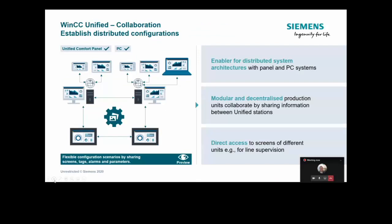Another option mentioned is the concept of collaboration — this is unique to WinCC Unified. This allows multiple different WinCC Unified systems to collaborate with each other. For example, we might have four different WinCC Unified systems: two PC-based with their own individual clients, and two panel-based Unified Comfort systems. The collaboration option — a licensed option on each station — allows us to share data between the different stations. For instance, sharing screens.